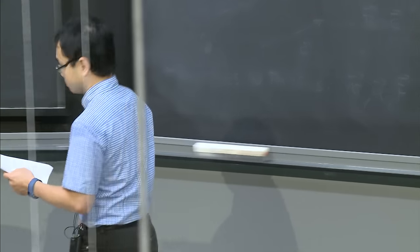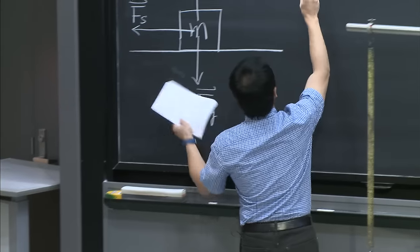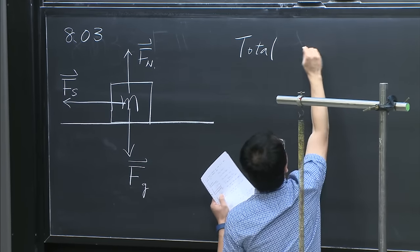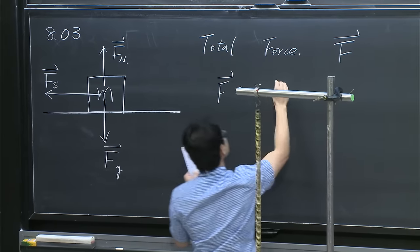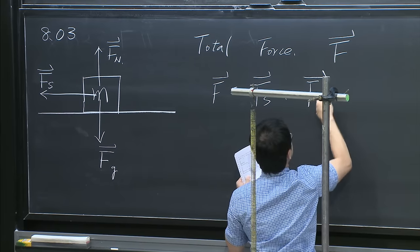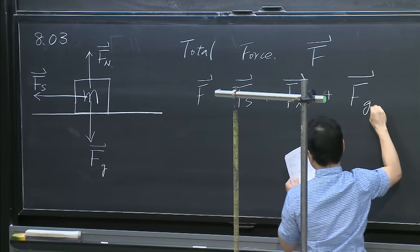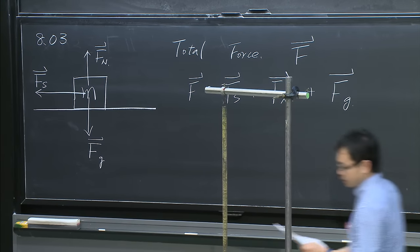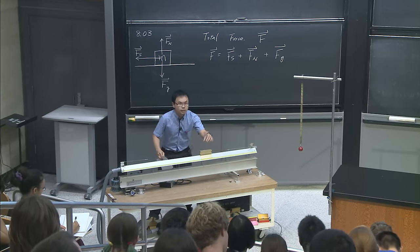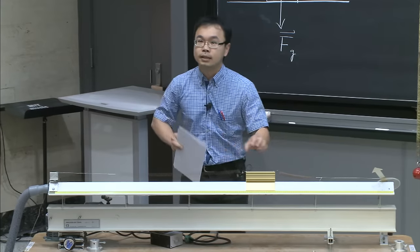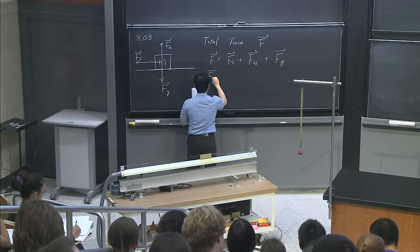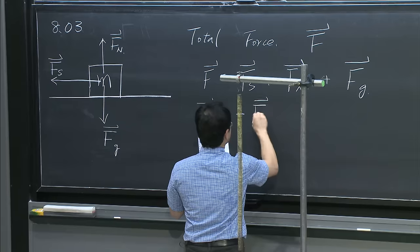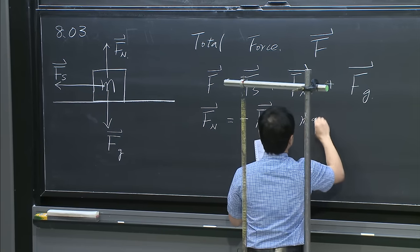Once we have the total force, we can use Newton's law: F equals ma, which equals m times d²x/dt² in the x direction. I'll use dot notation — each dot represents differentiation with respect to t. So this equals m times x-double-dot of t, which equals minus k times x(t) in the x direction.